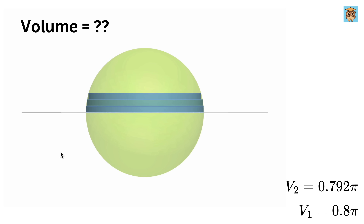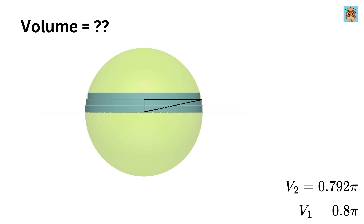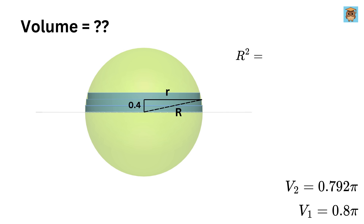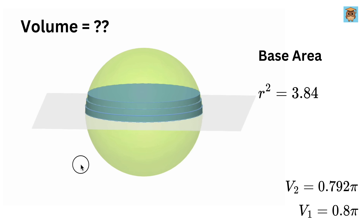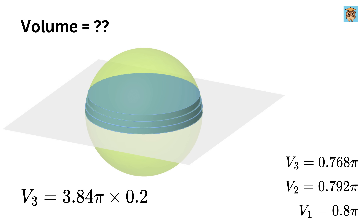For the third disk, the vertical leg is now 0.2 plus 0.2 equals 0.4. So small r squared equals 2 squared minus 0.4 squared, giving small r squared equals 3.84. The area of its base is 3.84pi, and the volume is 3.84pi times 0.2, or 0.768pi.